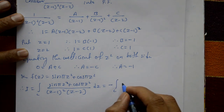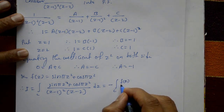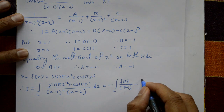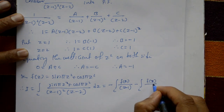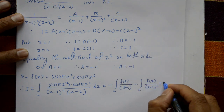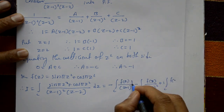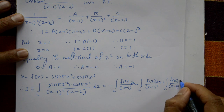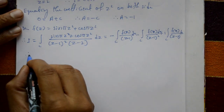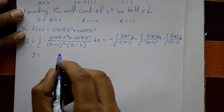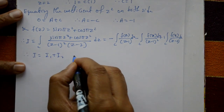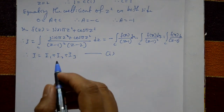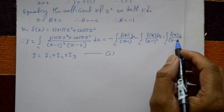With A = -1 and B = -1 and C = 1, the integral I splits as: I = I1 + I2 + I3, where I1 = -∫_C f(z)/(z-1) dz, I2 = -∫_C f(z)/(z-1)² dz, and I3 = ∫_C f(z)/(z-2) dz. Call this equation (1).